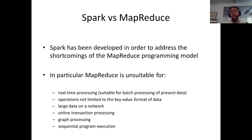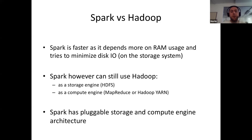Apache Spark is also suitable for online transaction processing and graph processing based on its internal graph model. MapReduce also doesn't address the problem of running sequential program flows along with the distributed execution model of data, and that's addressed by Apache Spark. Spark is also faster than Hadoop in some regards, as it depends more on RAM usage and tries to minimize disk I/O.